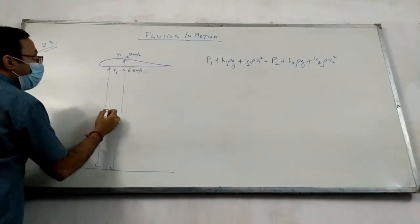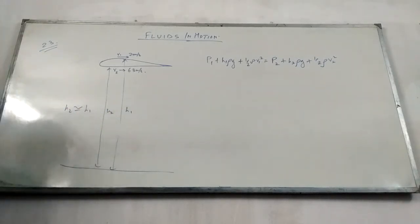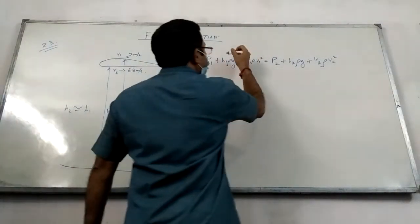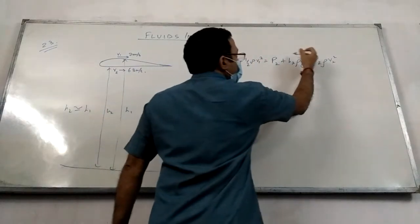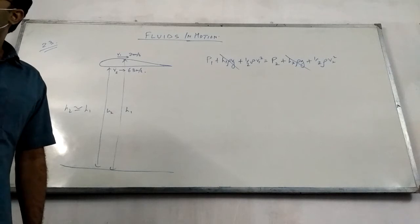utna high altitude ka hum log lower wing ka high measure karenge aur upper wing ka high measure karenge, so can we say h2 and h1 are nearly equal? Right? So they are nearly equal. If h1 and h2 are nearly equal, you can cancel off h1 rho g and h2 rho g from both sides.